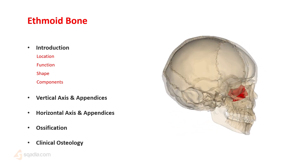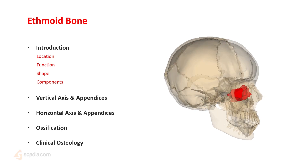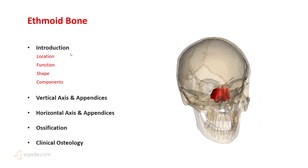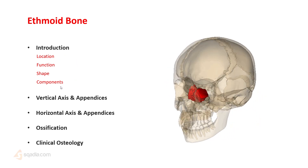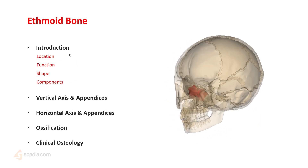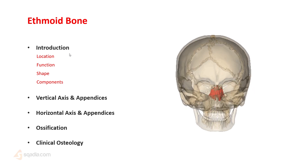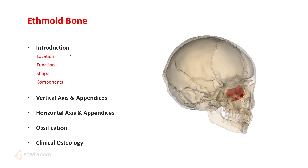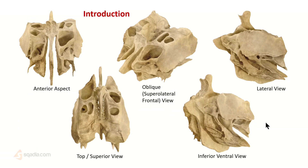But in the first video, we're only going to be talking about these points up to shape and components. Let's start. The first question is: what is the ethmoid bone?